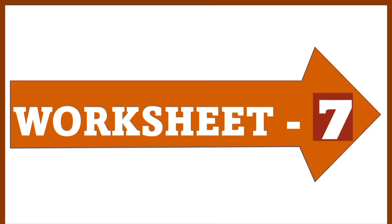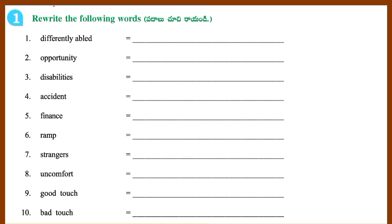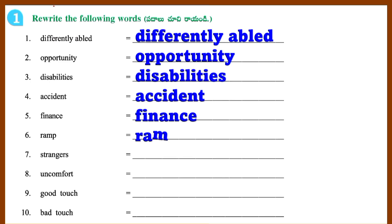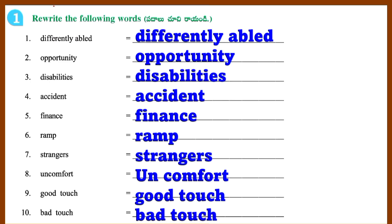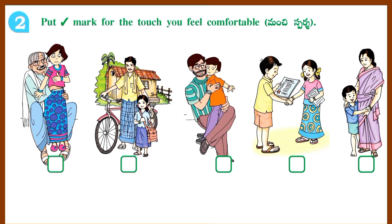Worksheet 7. Section 1: Rewrite the following words — Differently abled, Opportunity, Disabilities, Accident, Finance, Ramp, Strangers, Uncomfort, Good touch, Bad touch. Section 2: Put a tick mark for the touch you feel comfortable.